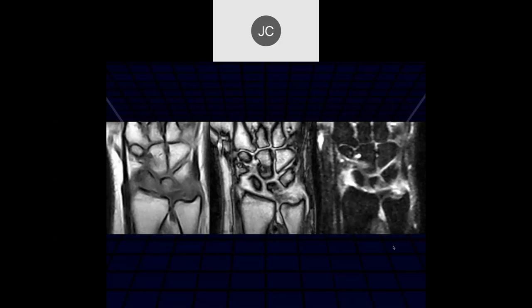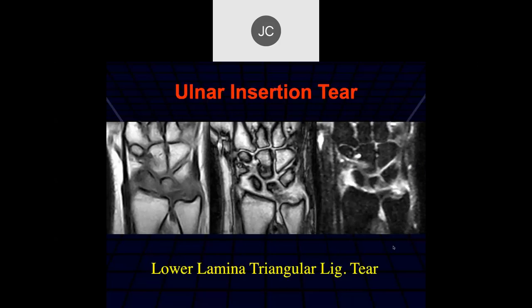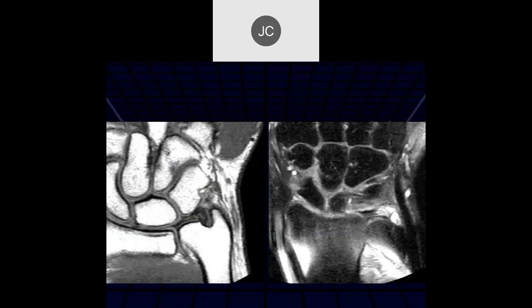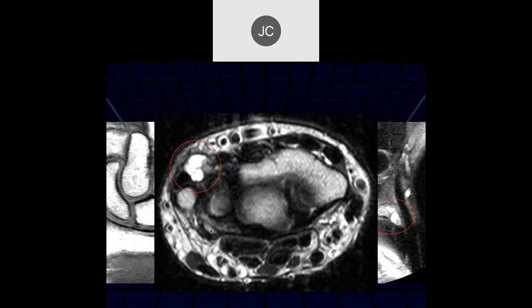Here it looks like there's some cystic change within the peripheral TFCC on the T1 — a vertical defect, tear of that lower lamina and foveal attachment. At surgery, this was an extensive tear of the peripheral attachments with cyst formation, so it was chronic.